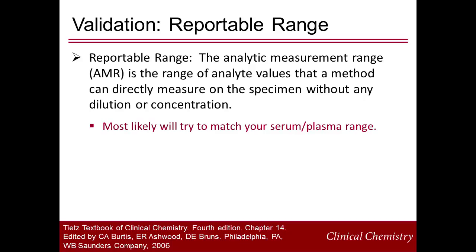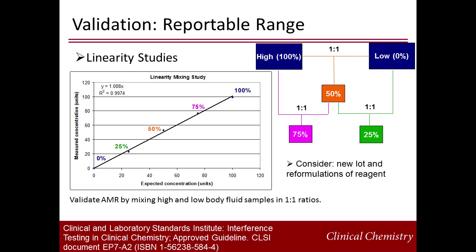Reportable range experiments are performed to demonstrate the range of concentrations which the analyte can be accurately measured on a sample prior to dilution or concentration. This may be chosen to reflect the serum or plasma analytical measuring range; however, this is not mandatory. The reportable range is established experimentally by performing a mixing study of high and low samples chosen to encompass the intended AMR. When mixed according to the scheme shown in one-to-one ratios, five equally spaced samples are created which span the AMR. Acceptance criteria may be set according to serum or plasma specifications or to meet clinical needs. Keep in mind that semiannual calibration verification and changes that may occur with new lots or reagent reformulations may require these experiments to be repeated following initial validation.